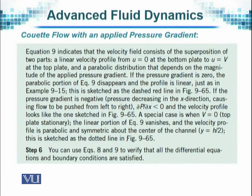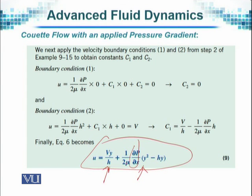And u equals V for the upper plate, the conditions that we already discussed in our first problem. But then there is some more parabolic distribution, and that depends on the applied pressure gradient delta p by delta x, as I mentioned.